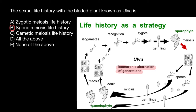In green algae we can also find zygotic meiosis life history and gametic meiosis life history. But if you know that your alga is a red alga, it would be easier to identify the life history, because in red algae only sporic meiosis life history is present. In green algae, all three are present: zygotic meiosis, sporic meiosis, and gametic meiosis. So it would be much harder to determine which life history applies to a particular seaweed unless you know from your textbook or lecture notes.